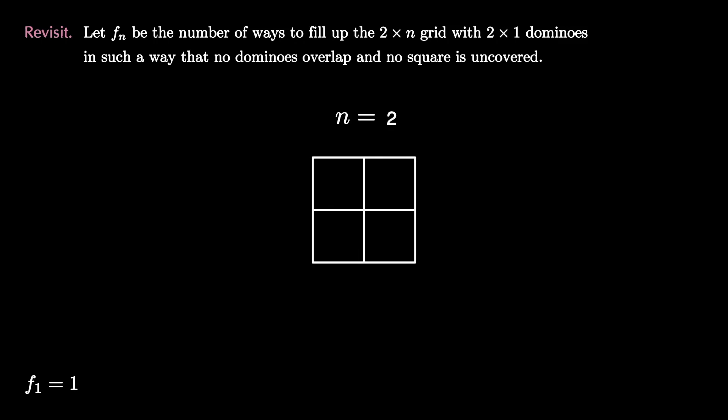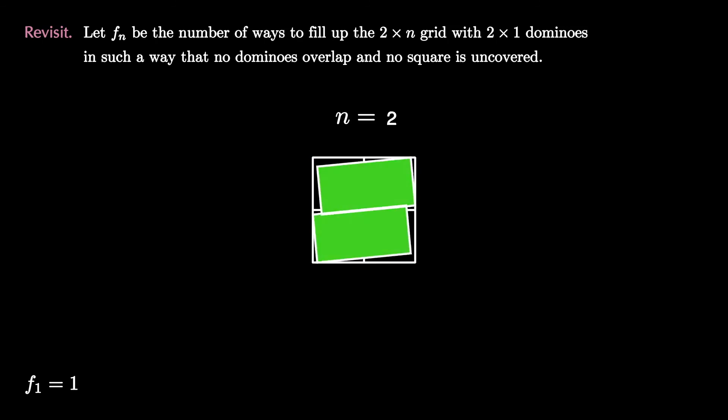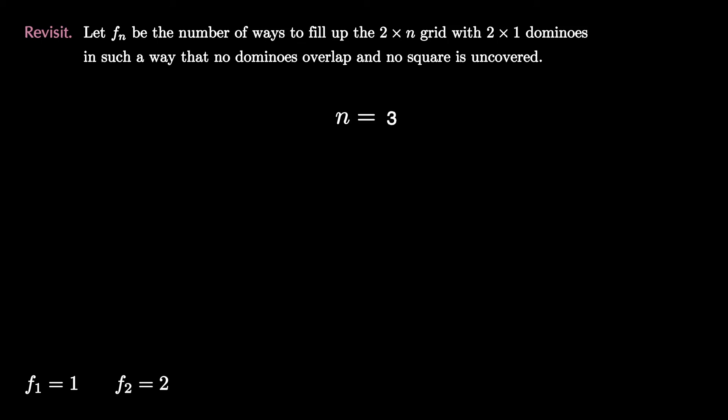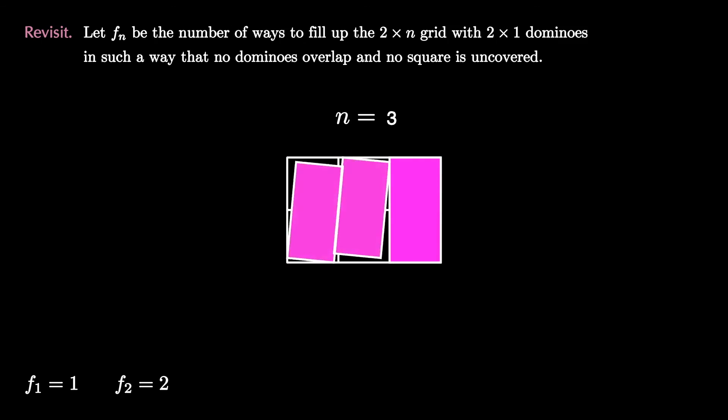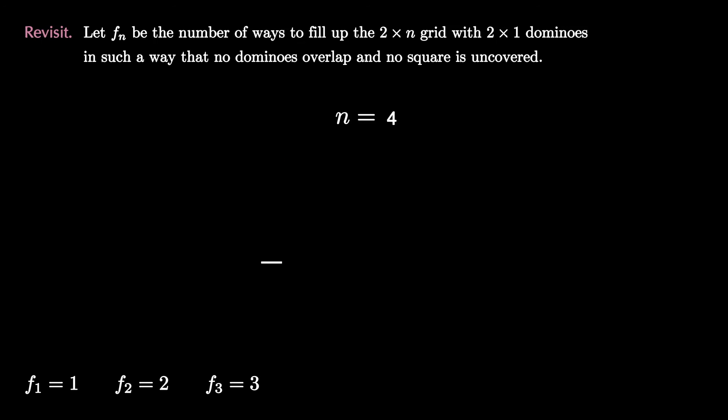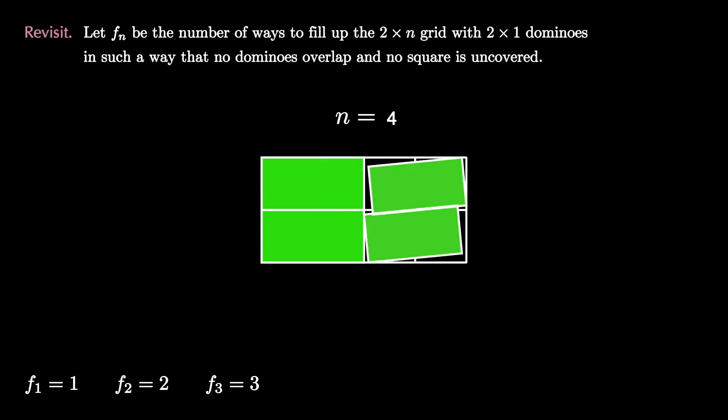When n is 2, we saw that F₂ was equal to 2. Here are the two tilings. We can investigate more. When n is 3, we can list out all the tilings, and we see that there are a total of 3 such tilings. Let's keep going. Let's try when n equals 4, because something interesting happens. In this situation, there are not 4 tilings as you might have guessed. Instead, there are a total of 5 tilings. So F₄ equals 5.